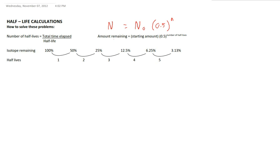We can see that the amount remaining N is equal to the starting amount N₀ times 0.5 to the power of the number of half-lives.